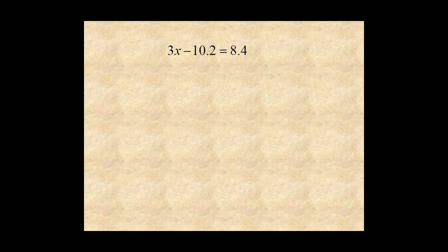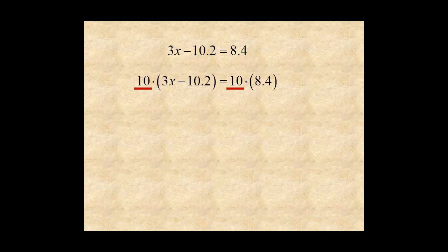In this example, one of the coefficients has no decimals, and the other two coefficients have one decimal place. Since the most number of decimal places is 1, multiply both sides of the equation by 1 power of 10. For 30x minus 102 equals 84.